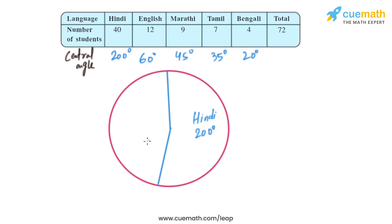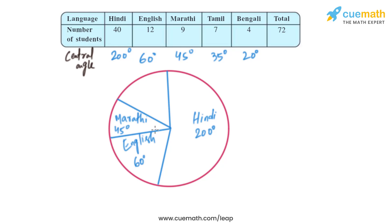Next, we draw English at 60 degrees using a protractor. Then Marathi at 45 degrees is drawn similarly. In the same way, we draw Tamil at 35 degrees, and the remaining portion left over is Bengali at 20 degrees. This is how we draw the complete pie chart.